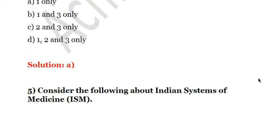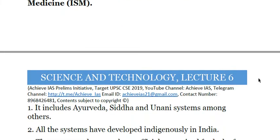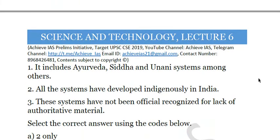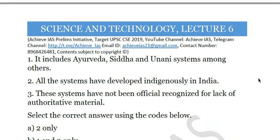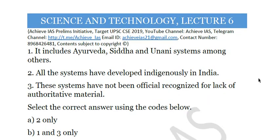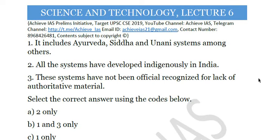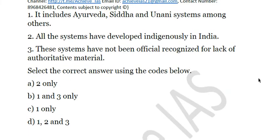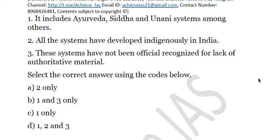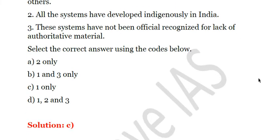Next question: consider the following about Indian systems of medicine. First, it includes Ayurveda, Siddha, and Unani systems among others. Second, all the systems have developed indigenously in India. Third, these systems have not been given official recognition for lack of authoritative materials. Only the first statement is correct. Unani was not developed in India but has been incorporated into the Indian system of medicines. The third statement is also incorrect because we have a dedicated ministry of Ayurveda. The answer is C.